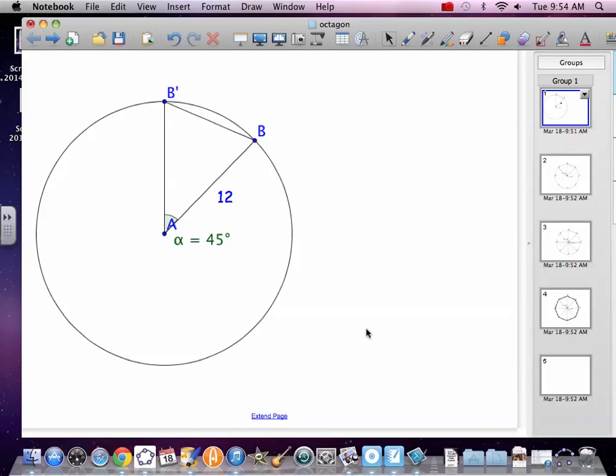Alright, we want to play with chords when we don't have very much information. For example, we've got a chord B to B prime. We know that it's being caught by an angle of 45 degrees. We know the radius is 12. We want to be able to calculate that chord.